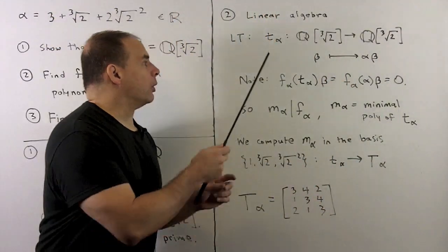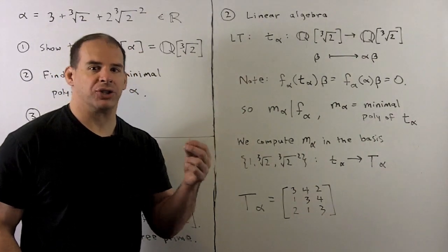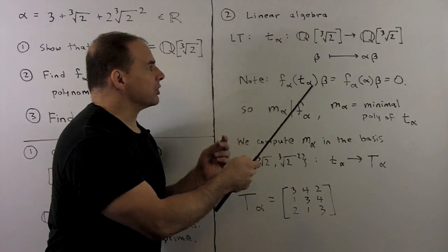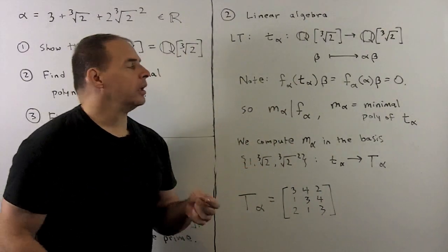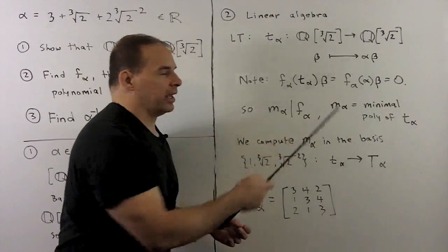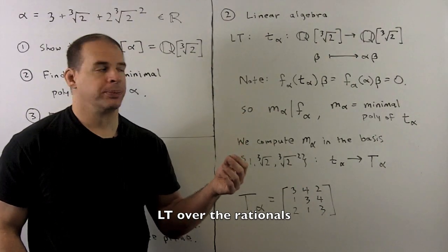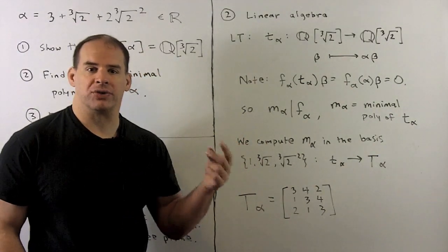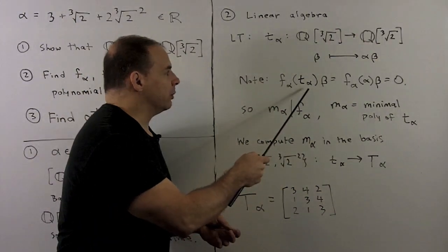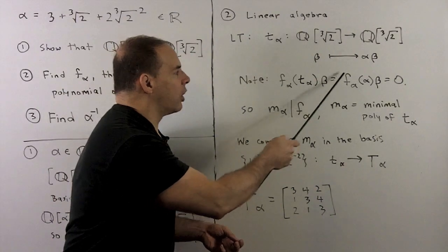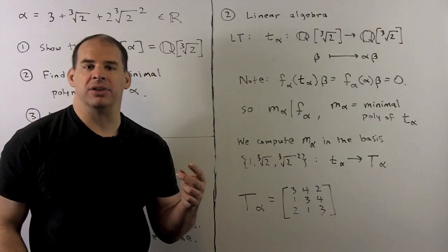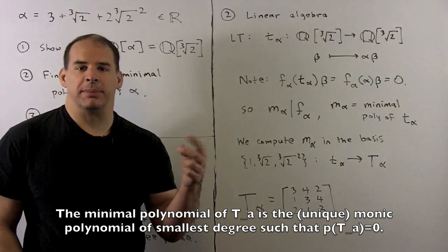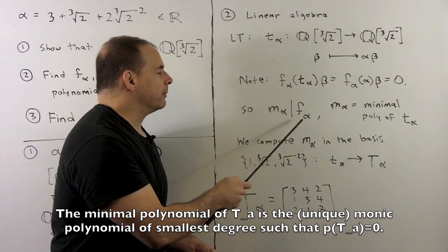For part 2, we want to compute the minimal polynomial f sub alpha over the rationals, so we're going to use linear algebra. We consider the linear transformation T sub alpha, which carries Q adjoin cube root of 2 back to itself, sending each beta to alpha times beta. It's straightforward to show this is a linear transformation. We also note that if we apply f sub alpha to T sub alpha as a polynomial of linear transformations, we get the zero transformation, because f sub alpha of alpha is zero by definition. That means the minimal polynomial of T sub alpha as a linear transformation divides f sub alpha.